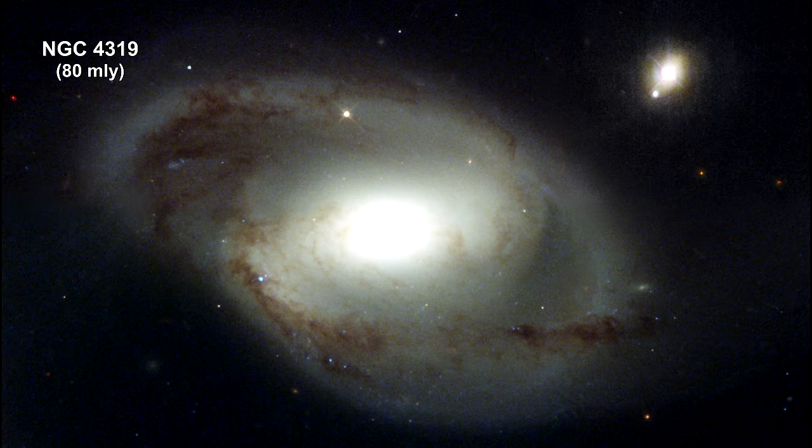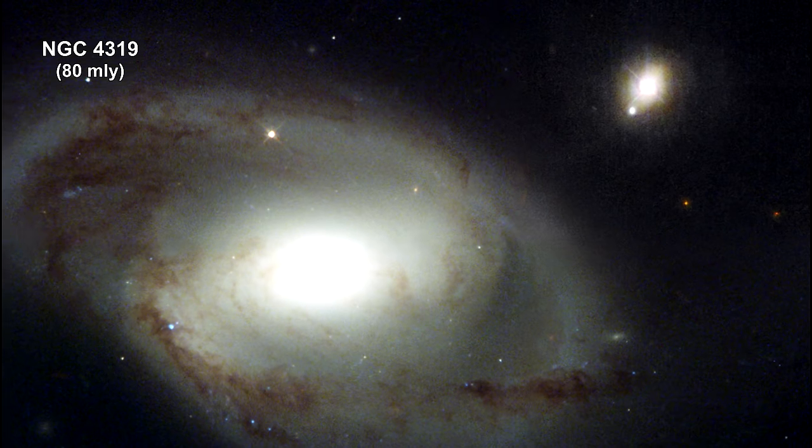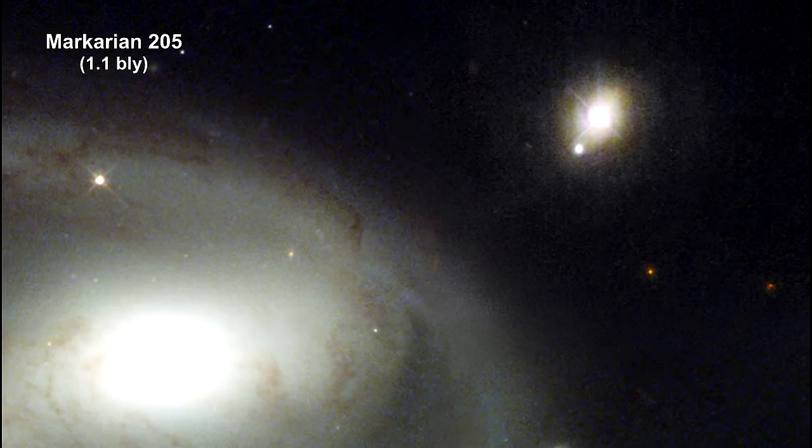You might recognize NGC 4319. It is a galaxy in the Virgo supercluster. Of interest now is the small light at the upper right. It's the quasar called Markarian 205. It's 1.1 billion light-years away.